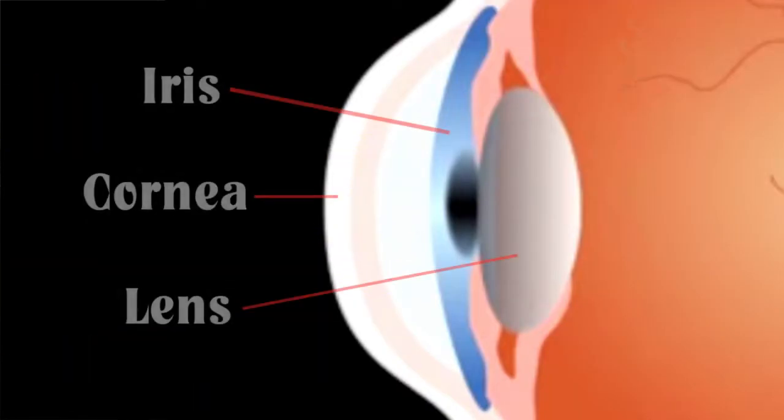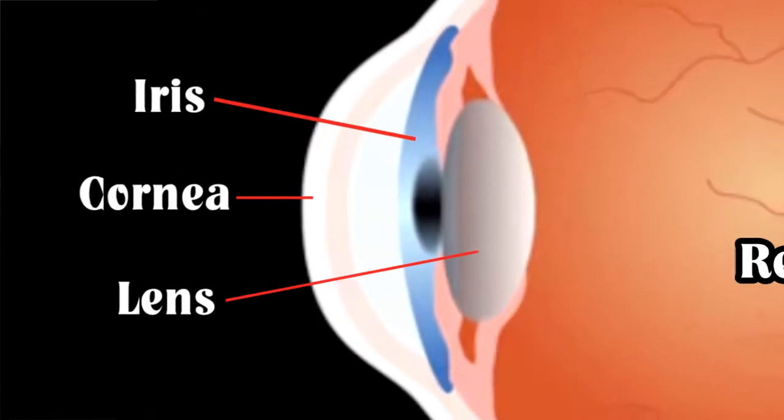Light waves act in a similar way. We see things by light that is reflected off objects that is focused by the lenses in our eyes and onto the retina.